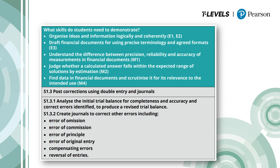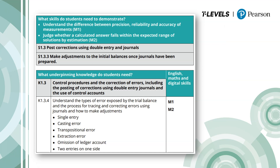We then have the specialist skill S1.3: post-corrections using double-entry and journals, broken down further into sub-skills — five in total. You can see S1.3.1 and S1.3.2 on screen, but in the specification S1.3.3, 3.4 and 3.5 are also featured. All five sub-skills are required to achieve the specialist skill S1.3. We're now looking at the third sub-skill, S1.3.3: make adjustments to the initial balances once journals have been prepared.